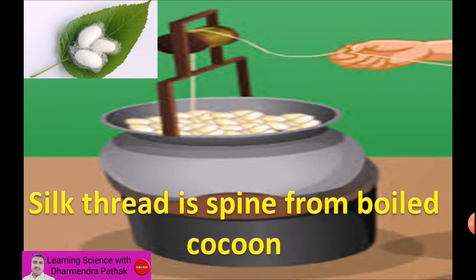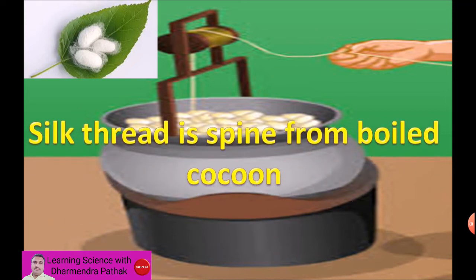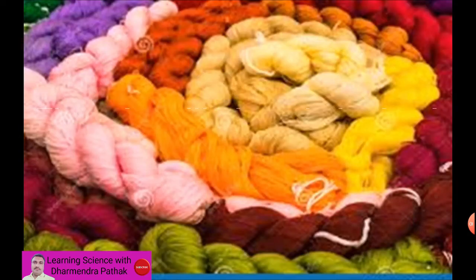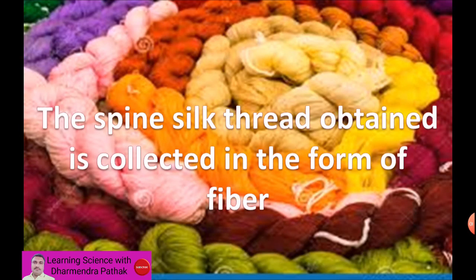Silk thread is spun from the boiled cocoon and the thread is extracted. The spun silk thread obtained is then collected in the form of silk fiber.